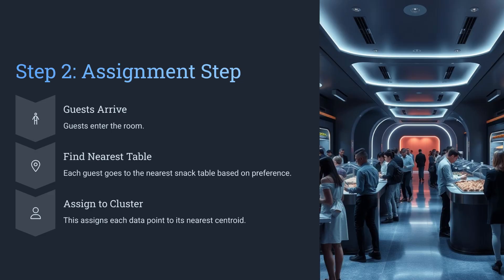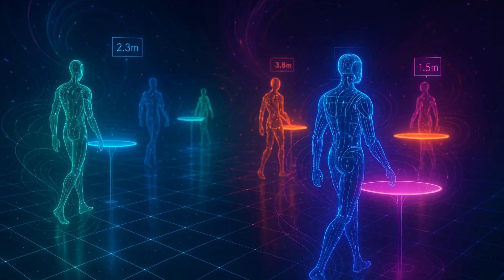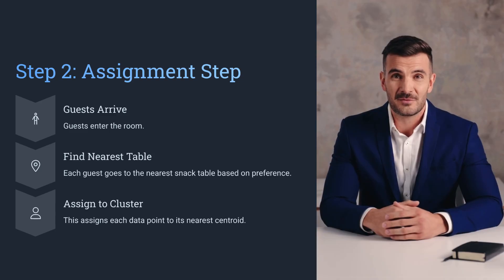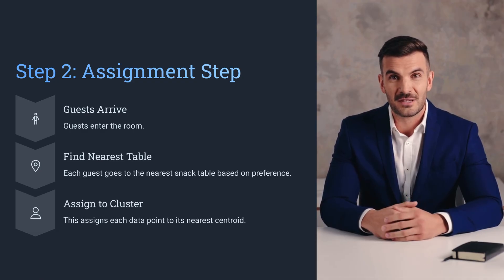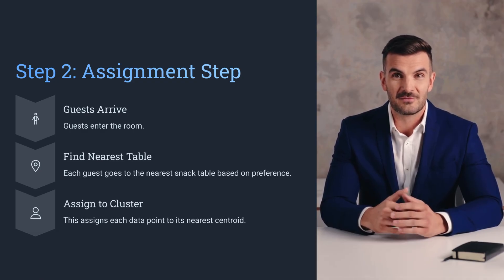Step 2: Assignment step. Guests arrive and choose the closest snack table. In k-means, this is the assignment step — each data point joins the nearest cluster. Now we start seeing natural groupings form as everyone finds their spot.